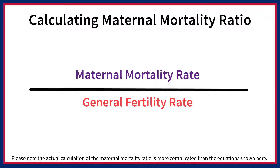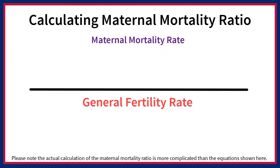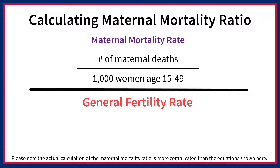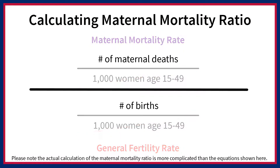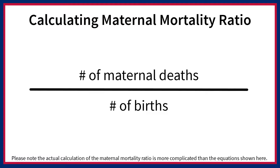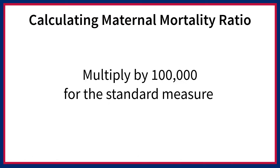In practice, the MMR is calculated by dividing the maternal mortality rate by the general fertility rate for the same reference period. The maternal mortality rate is maternal deaths per 1,000 women age 15 to 49, and the general fertility rate is births per 1,000 women age 15 to 49. In this division, the denominators of the two rates and the factors of 1,000 cancel out, so in effect the maternal deaths have been divided by the births. The result is then multiplied by 100,000 for the standard measure.